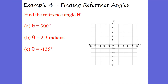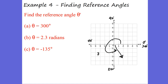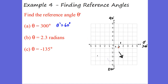Our first angle is 300 degrees. Remember, we have 0, 90, 180, 270, and 360 degrees, which means 300 degrees puts us right here in quadrant 4. So how do we find the reference angle? We take 360 minus 300, and that gives us a reference angle of 60 degrees. Pretty easy to find reference angles.